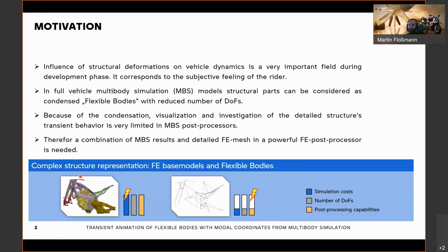To clarify this, let's take a look at the pictures. On the left, you see an FE model of all the structural parts of a motorcycle — the front fork, mainframe, rearframe, engine housing, and rear swing arm. This is a very detailed FE model with high simulation cost but also many degrees of freedom and post-processing capabilities. If you switch to the flexible bodies of this model, you have a very limited visual representation — here just 1D plot elements showing the rough geometry. So the simulation costs are reduced, the degrees of freedom are reduced, but the post-processing capabilities are also reduced.